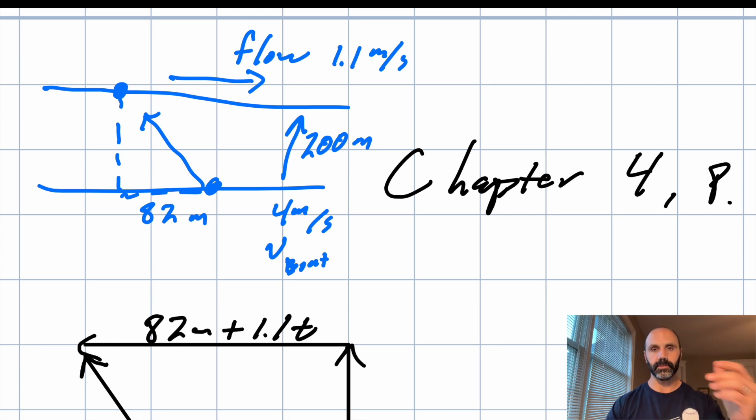And so what we need is really like a triangle. Now, there are two different triangles that we could draw. We could draw a triangle that shows us distances. And even the distance triangles, there are two triangles that we could draw. One would be the triangle relative to the shore. The other would be the triangle relative to the river. The river itself is moving. When the boat goes 82 meters upstream, that's relative to the shore. But it has to travel more than 82 meters upstream relative to the river, right?